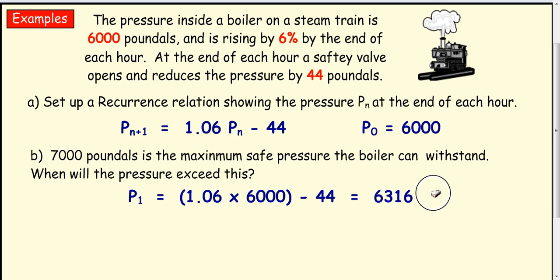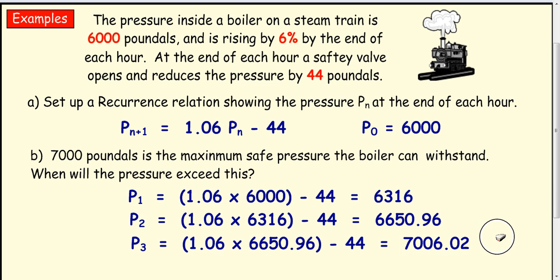So P₁, take your 6000, multiply it by 1.06 and then take away 44. P₂, do the same idea, taking this value, multiplying by 1.06 and taking away 44. Same again.